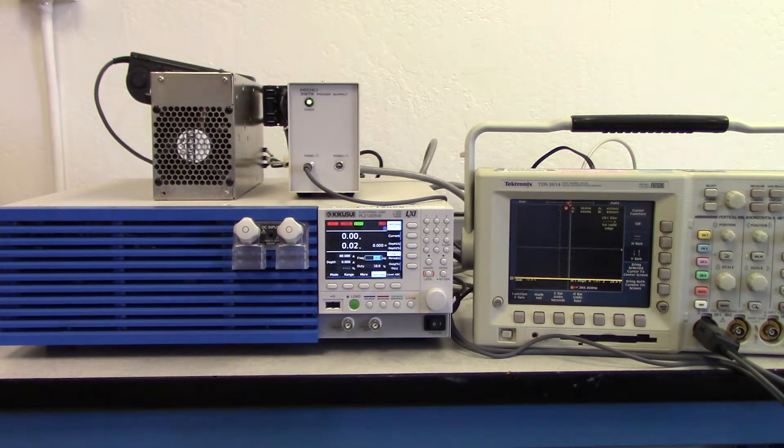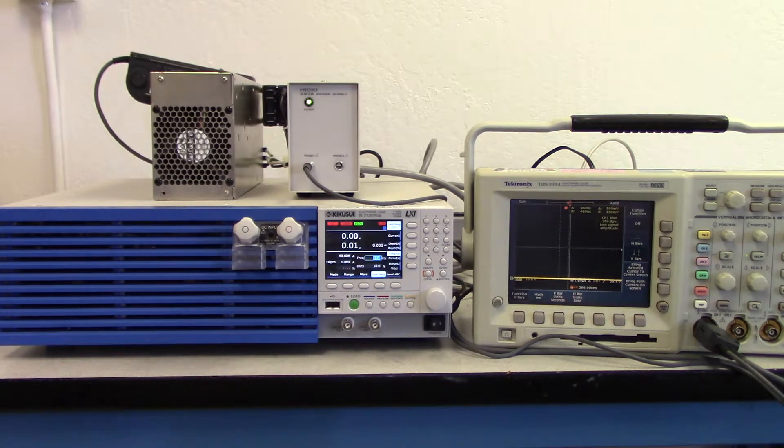Today we want to show a quick demonstration of the 60 amps per microsecond maximum slew rate of the new Kikisui PLZ1205W DC electronic load, a key feature of this particular model in the new PLZ5W series.